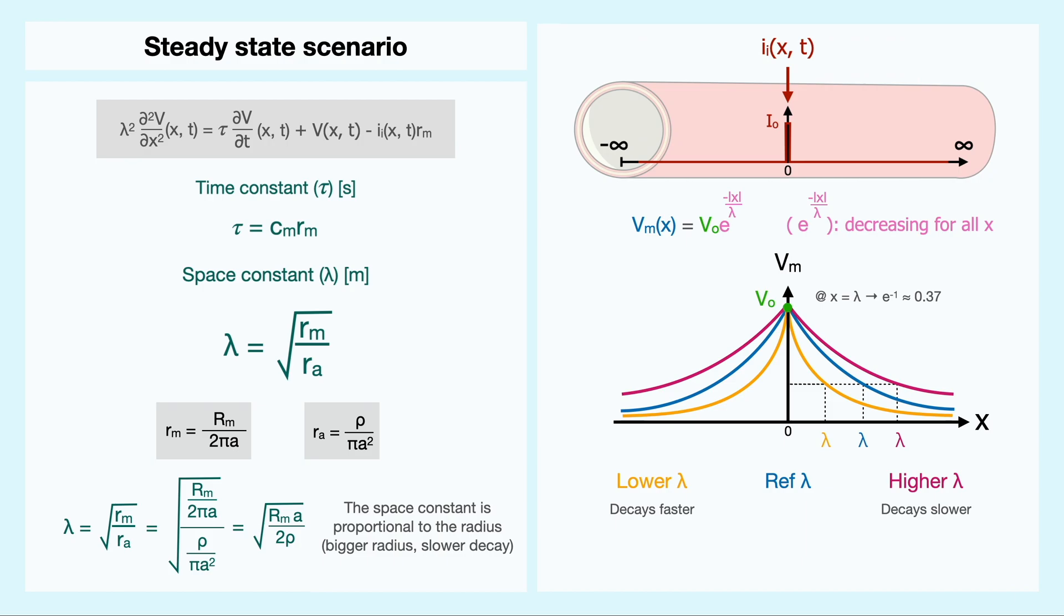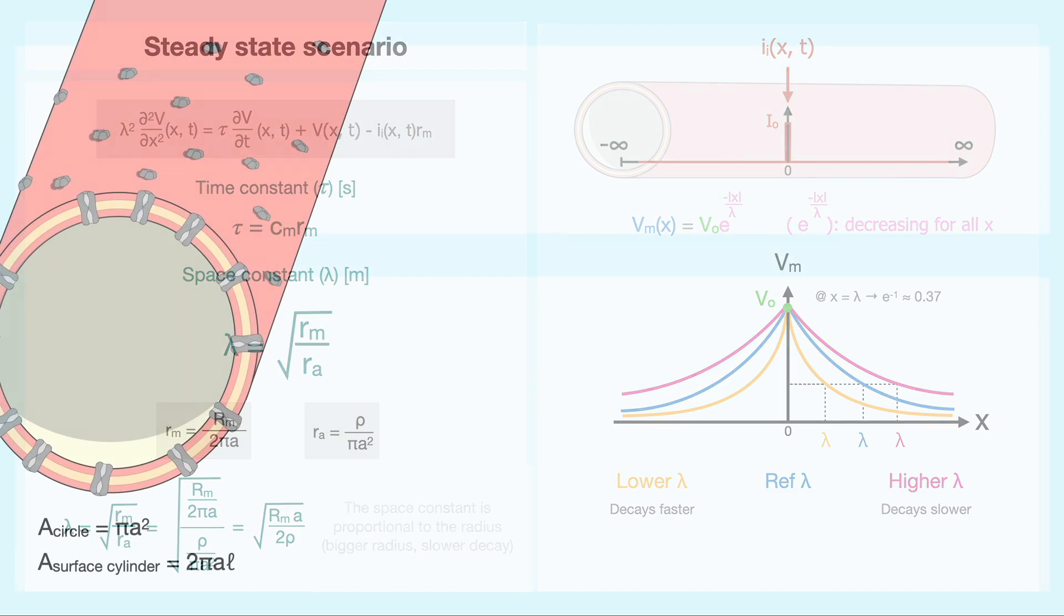you can see that the constant is directly proportional to the root of the radius. Thus, as the dendrite or axon gets bigger, then so does the space constant, and thus the signal is better maintained in terms of position.